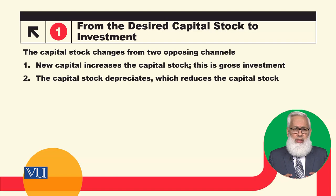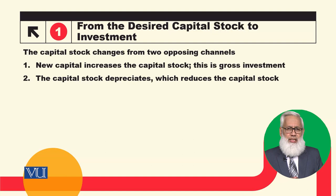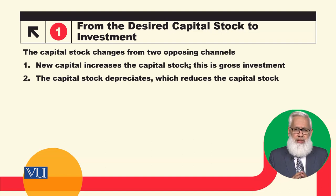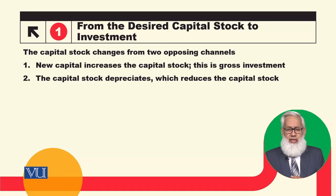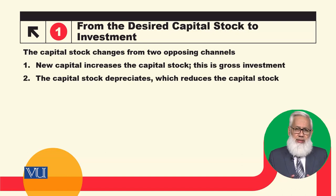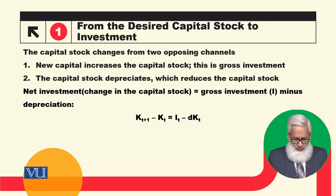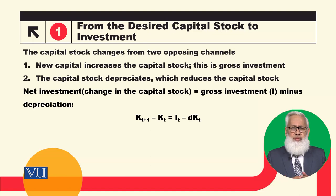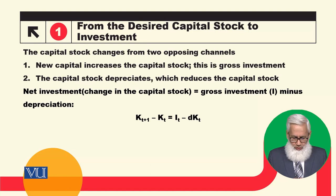To repeat: the capital stock in a particular time period has two types of changes. Number one, by adding new capital goods and equipment, which increases the existing capital stock. And secondly, the existing capital stock will depreciate. So, what will be net investment?